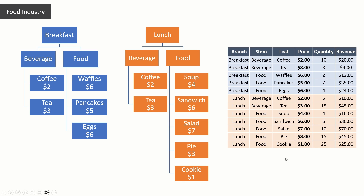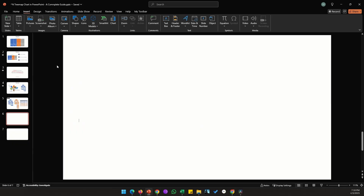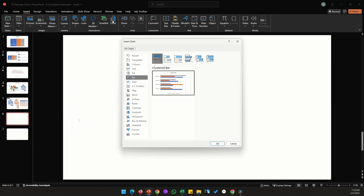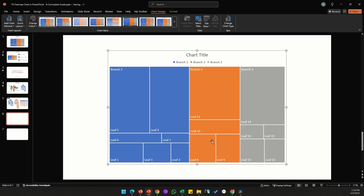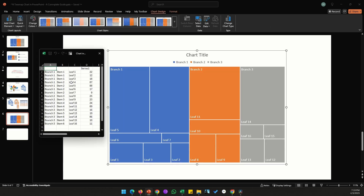Let's start by creating a basic tree map chart on a blank slide. Go to Insert, click on Chart, and locate Tree Map. Under Tree Map we just have one option, so click OK.